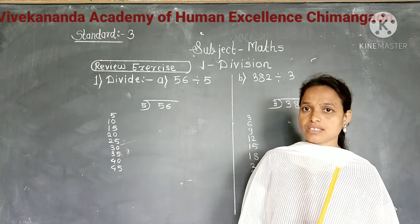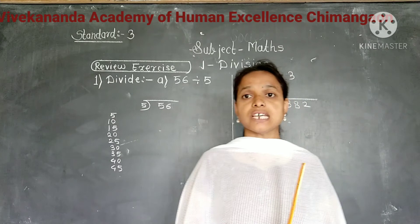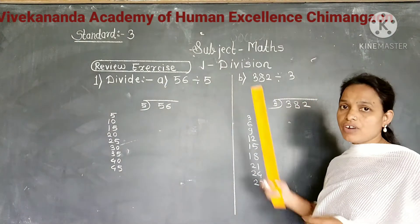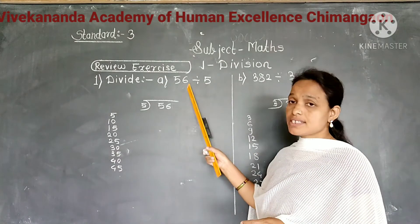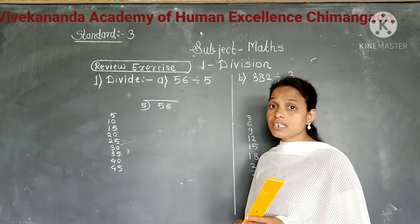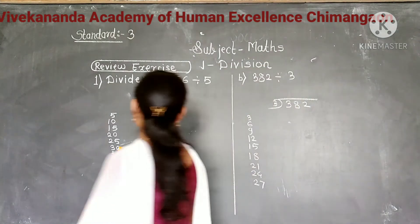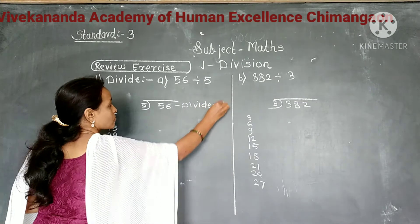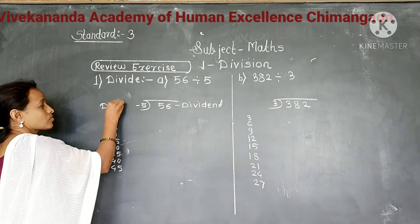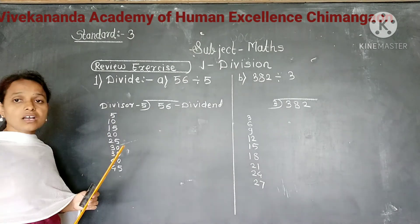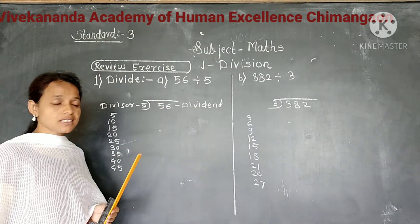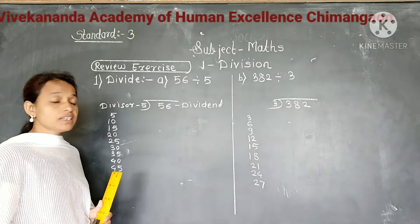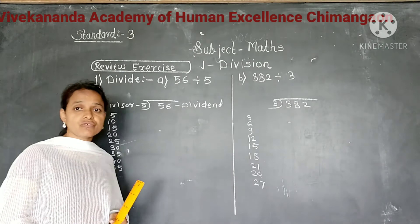Now we will solve 3 new examples. First question: divide 56 by 5. Here 56 is the dividend and 5 is the divisor. We write the dividend and divisor in the correct places.